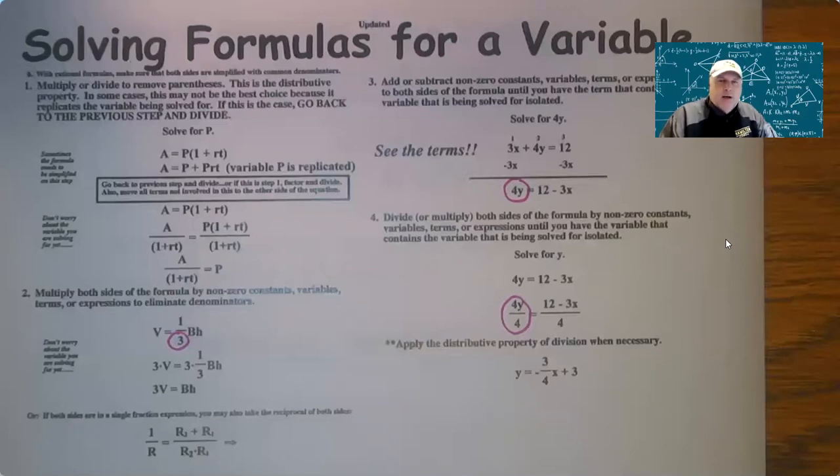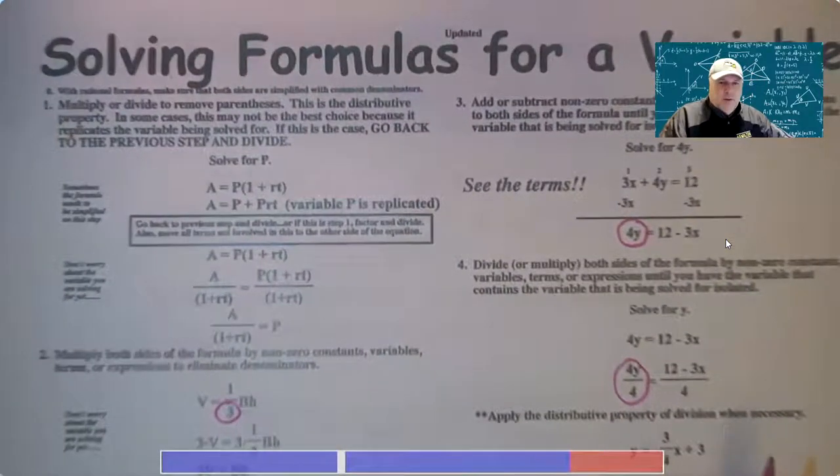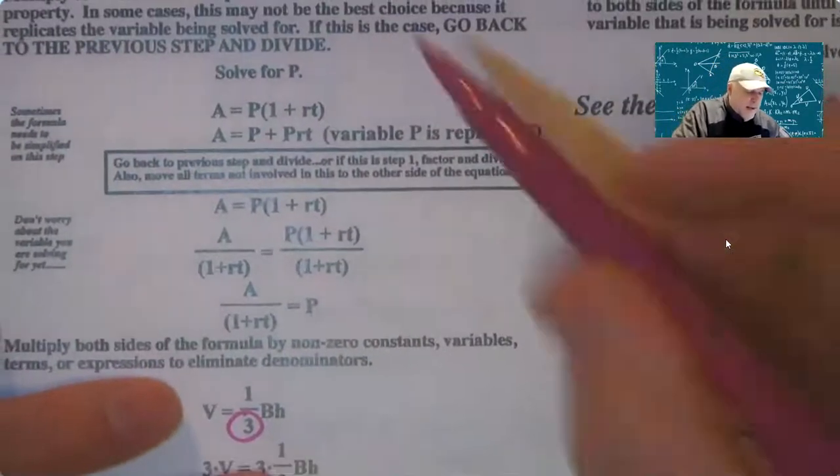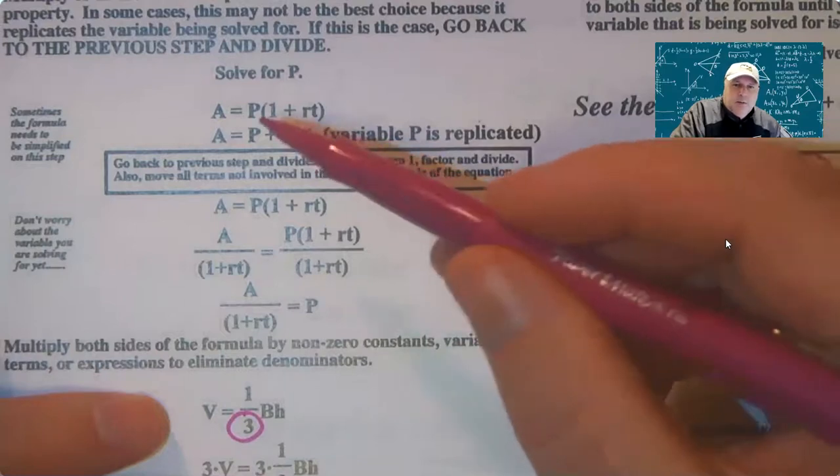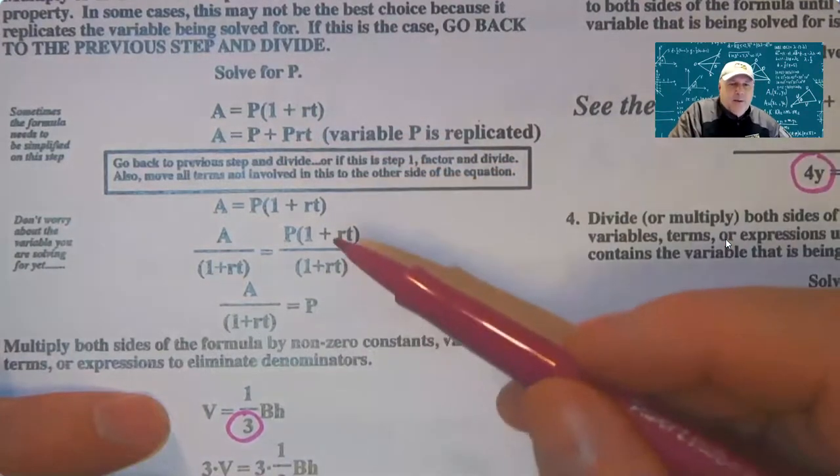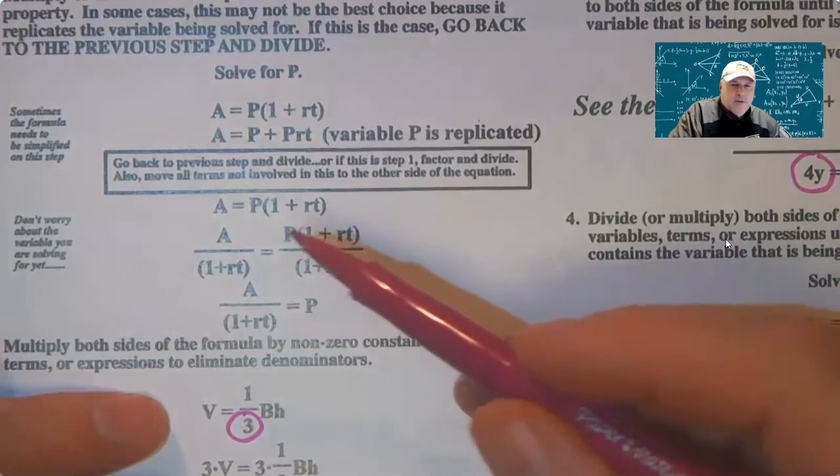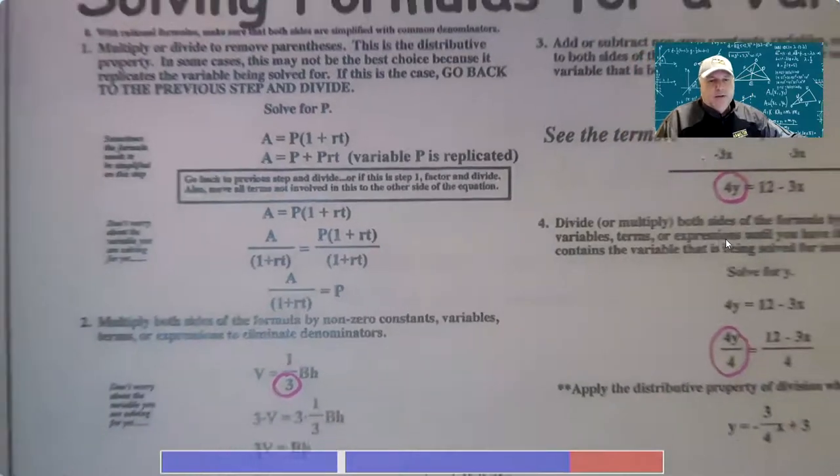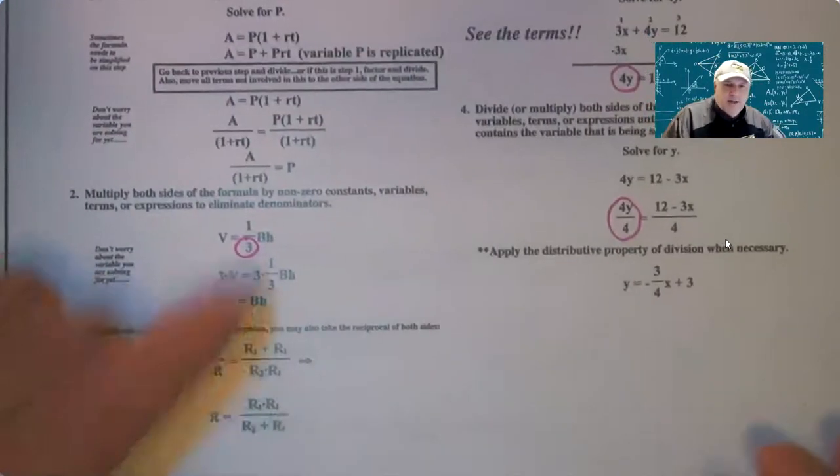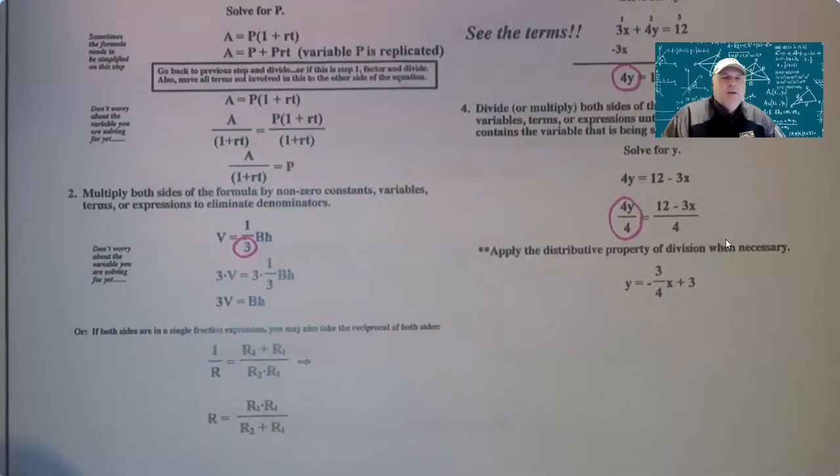In general, you want to multiply to remove parentheses. If you multiply into a set of parentheses and you replicate the variable, so we're trying to solve for P, I multiplied P and it gave me P twice, then you have to back up and divide by whatever expression is multiplied by P to solve that. Step two: eliminate denominators. This is huge, the most important thing on these four steps.